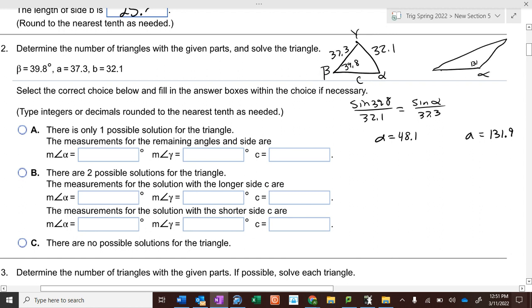So alpha could be 131.9. This is still 39.8, this is still 37.3, this is still 32.1, this is c and gamma. So now in both triangles I gotta figure out what gamma is. What's 180 minus 48.1 minus 39.8? That would be 92.1. Over here to find gamma, 180 minus 131.9 minus 39.8.